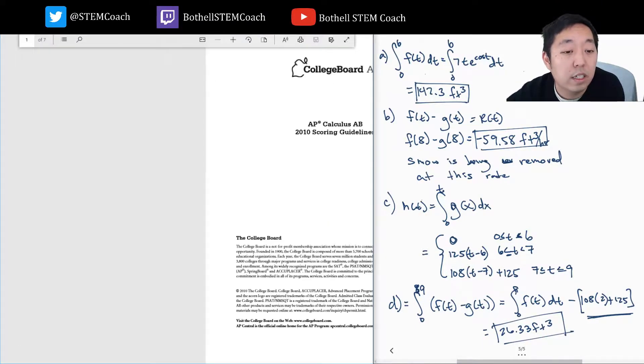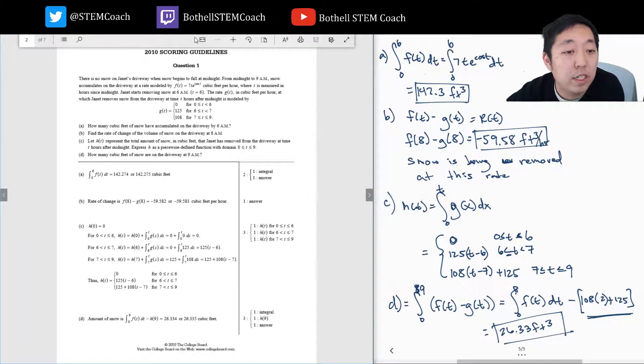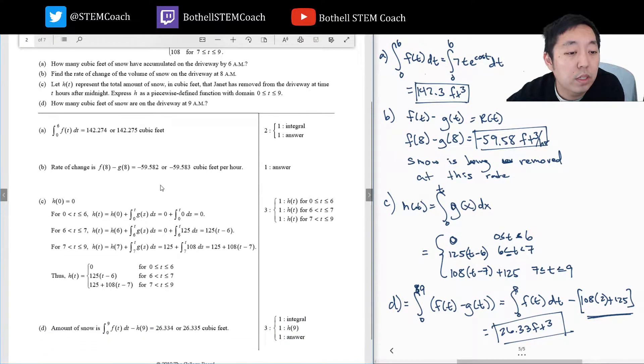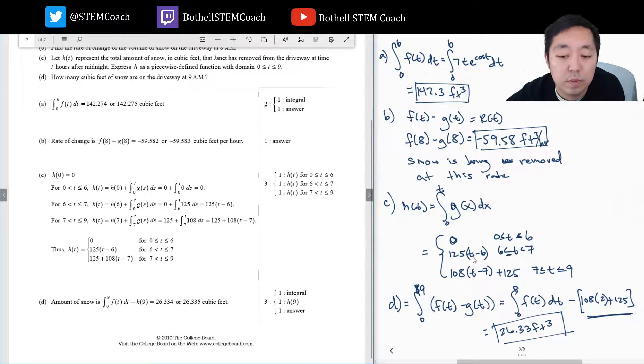Alright, let's take a look at how we did on the answers here. 142.3 - I mean, I should have done 3 decimal places, I forgot. That looks correct. Part C: 125(t - 6), 108(t - 7) + 125, and 26.334, 335. Okay, so perfect.